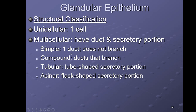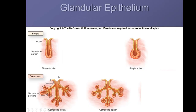Naming-wise: if a gland has one duct and it doesn't branch, it's called simple; if it has multiple ducts that branch, it's called compound. If the secretory portion looks like a tube it's called tubular; if it looks more like a flask or rounded shape, it's called an acinus. So you can have combinations: simple tubular, compound tubular, simple acinar, and compound acinar.